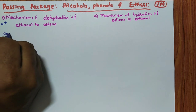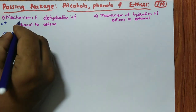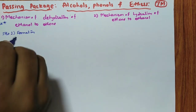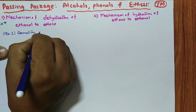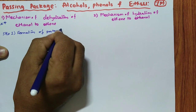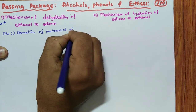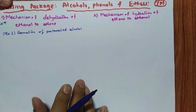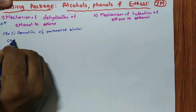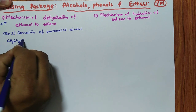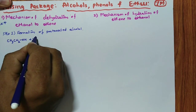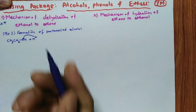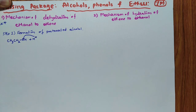In step one, formation of protonated alcohol. See, you have to write along with this the statement also: formation of protonated alcohol. Which means, clearly, here what we will do is we will take alcohol — CH3, CH2, OH — so H+ will attack on this particular alcohol, on this oxygen. Arrow mark, if you want you can write; otherwise, if you don't write, no problem.